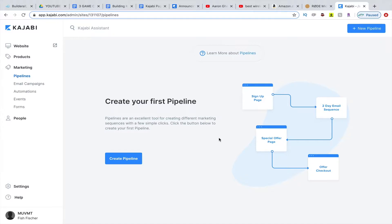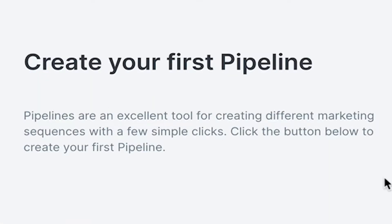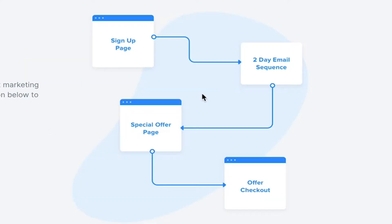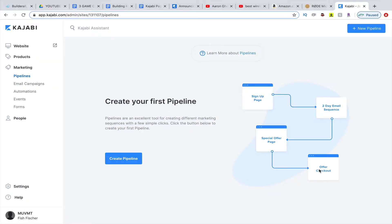Right off the screen here, Pipelines are an excellent tool for creating different marketing sequences with a few simple clicks. If you look at this little diagram, you can see a sign-up page, and then that sign-up page links to a two-day email sequence, and then that links over to a special offer page, and then that special offer page moves over to an offer checkout. It can get quite complicated trying to move all these different pages and emails and connect them all, but Kajabi allows you to just build it in-house very simply.